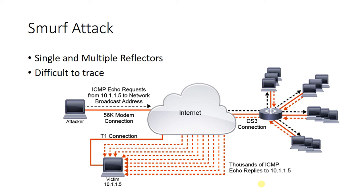Here is the attacker — the bad guy. What he is going to do is use a V56K modem connection. We would look at that and go, wow, that's nothing — and yeah, he doesn't really need a lot of bandwidth to send a ping packet. He is going to send an ICMP echo request to a network, specifically to the directed broadcast address. That packet makes its way through the internet and goes into the network where that directed broadcast was sent. It hits the network as a directed broadcast, and all the machines on the network are going to reply back.